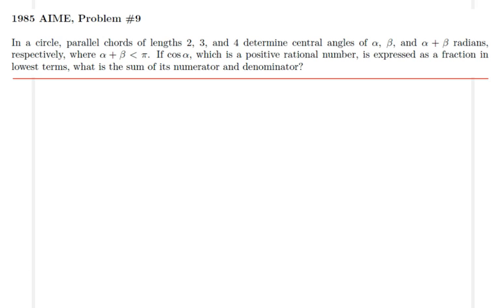Here is a view of this problem. In a certain circle, we have parallel chords of length 2, 3, and 4, determining central angles of alpha, beta, and alpha plus beta. The question is asking for cosine alpha, the angle which subtends this small length 2. We are also given a condition where alpha plus beta is less than pi.